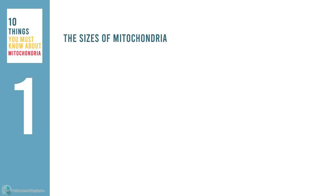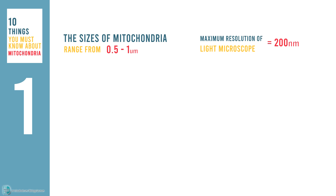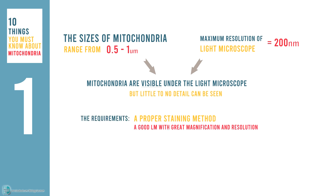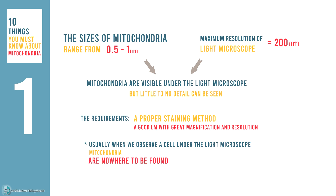The sizes of mitochondria range from 0.5 to 1 micrometer. Since the maximum resolution of a light microscope is 200 nanometers, mitochondria are visible under the light microscope, although little to no detail can be seen. However, it requires a proper staining method and a very good light microscope with great magnification and resolution. That's why usually, when we observe a cell under the light microscope, mitochondria are nowhere to be found.